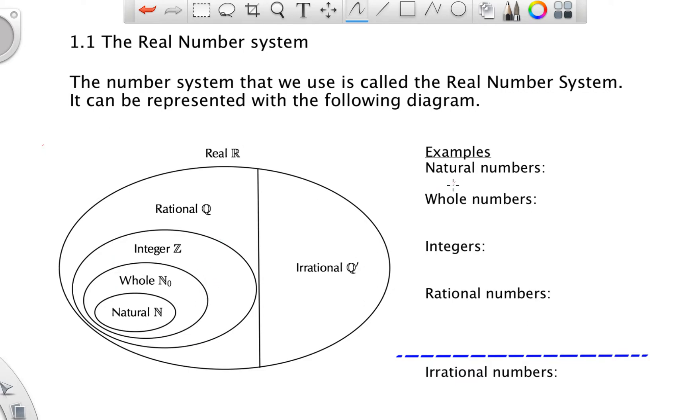And it's composed of natural numbers, whole numbers, integers, rational numbers on one side. So that's on this left side, and on the right side we have irrational numbers.